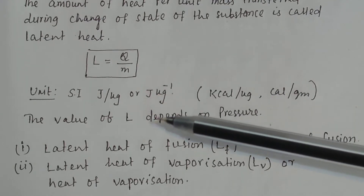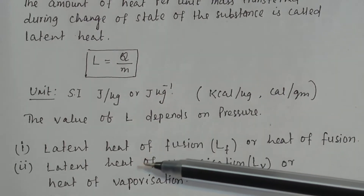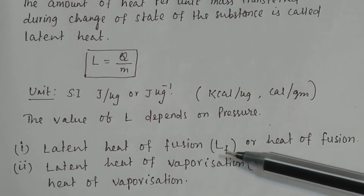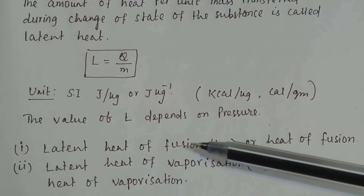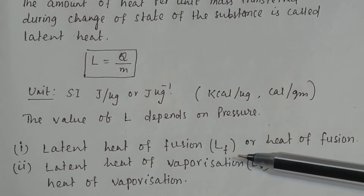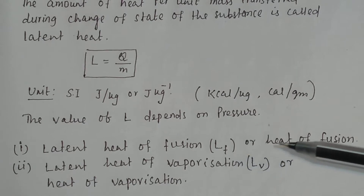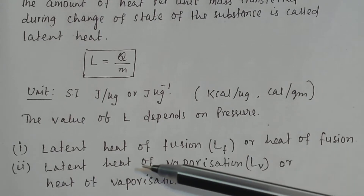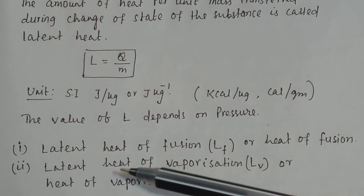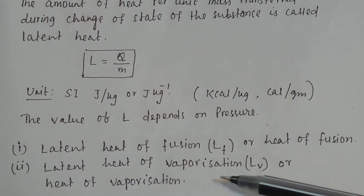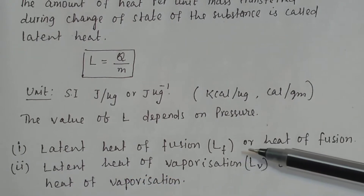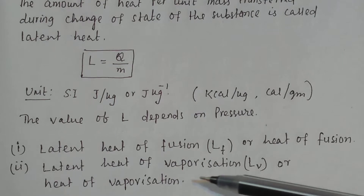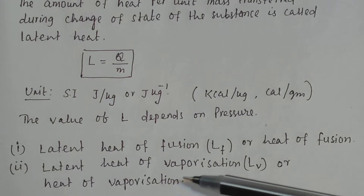There are two types of latent heat. One is latent heat of fusion, denoted by the symbol LF — it is also called heat of fusion. Another one is latent heat of vaporization, denoted by the symbol LV, also called the heat of vaporization.